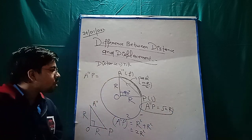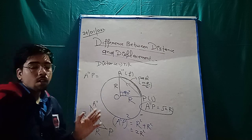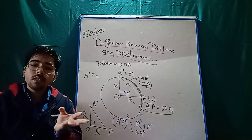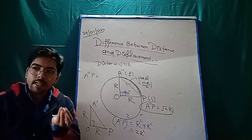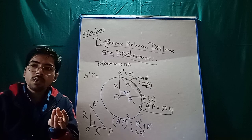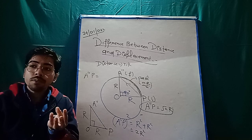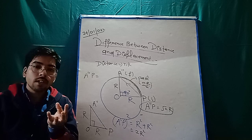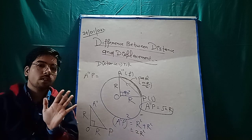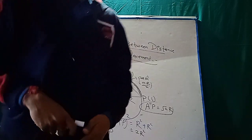To summarize: distance is the total length of the path, while displacement is the shortest distance between the initial and final position. Clear? Thanks a lot, thank you so much.